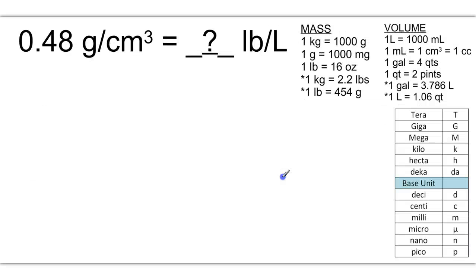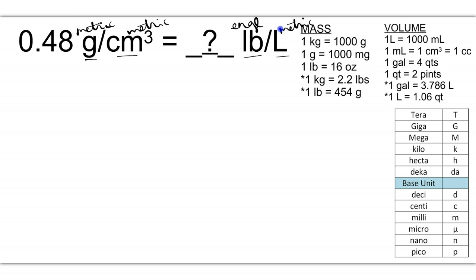Another example: this time we're going to convert a mass unit — grams, which is metric — to an English mass unit, pounds. The denominator is a volume, and this one is also metric, and we're going to go to liters, which is also a metric volume. So we're going to go from grams to pounds in the numerator, and from centimeters cubed to liters in the denominator. I'm going to rewrite the given as 0.48 grams all over one centimeter cubed.